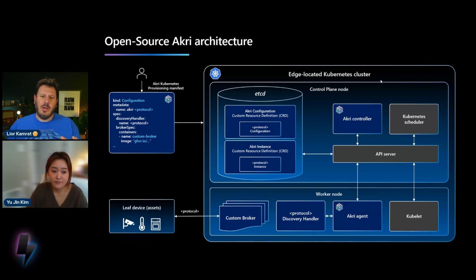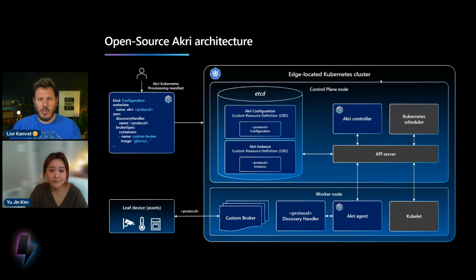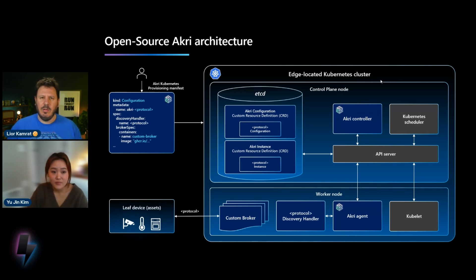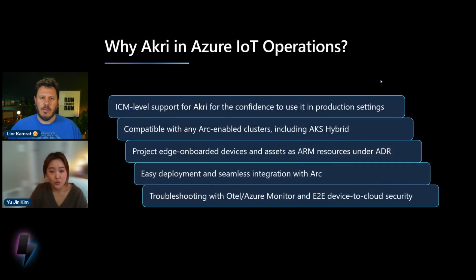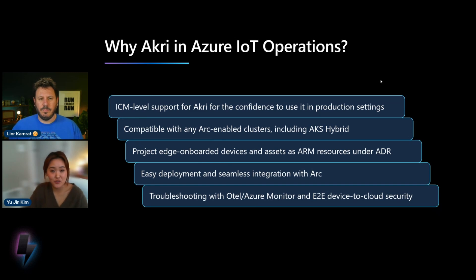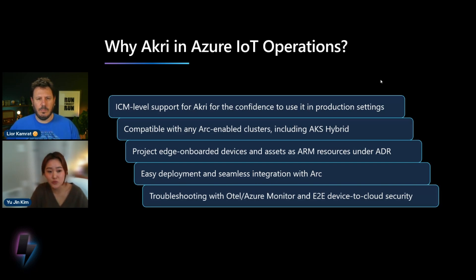What you're describing here is a deployment that is isolated in the sense that Acri started as an open source project and you can deploy it on any Kubernetes cluster. As part of this video series, we're talking about this integration with Azure IoT Operations. What can you tell me about how that integration looks like today? So first, I just want to quickly go over why we're even putting Acri in Azure IoT Operations. One of the main things is that users might feel a little anxious about using an open source project in production settings.